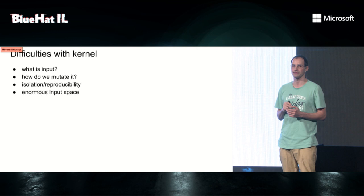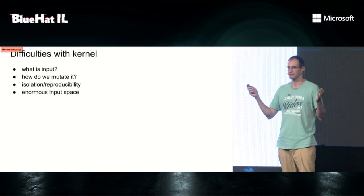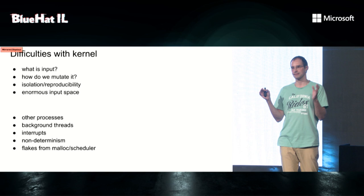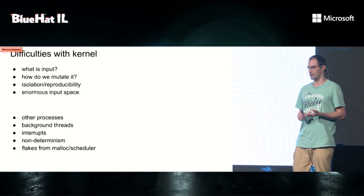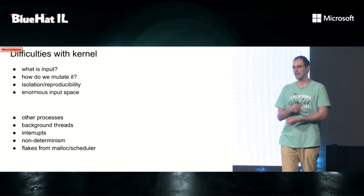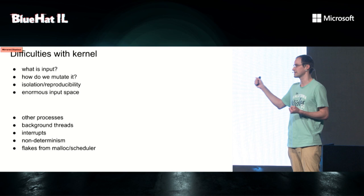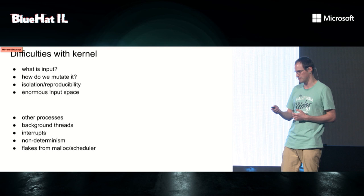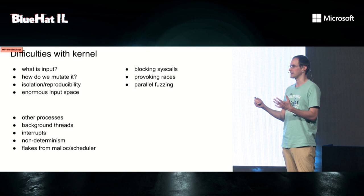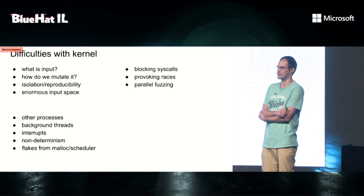There are also issues with coverage. User space fuzzers assume coverage is completely deterministic, stable, and a function of the input, but that's not true for the kernel because there are other processes, background threads, interrupts, and sometimes intentional non-determinism. We get flakes from malloc and scheduler — for example, malloc on low memory can start doing swapping and call into the file system, and we see all of this as coverage for our input. Additionally, if we create a pipe and try to read from it, it will block because the pipe is empty. Also, provoking races is important — user space fuzzers assume multi-threading doesn't exist and that races don't cause bugs, but for the kernel it's very important.